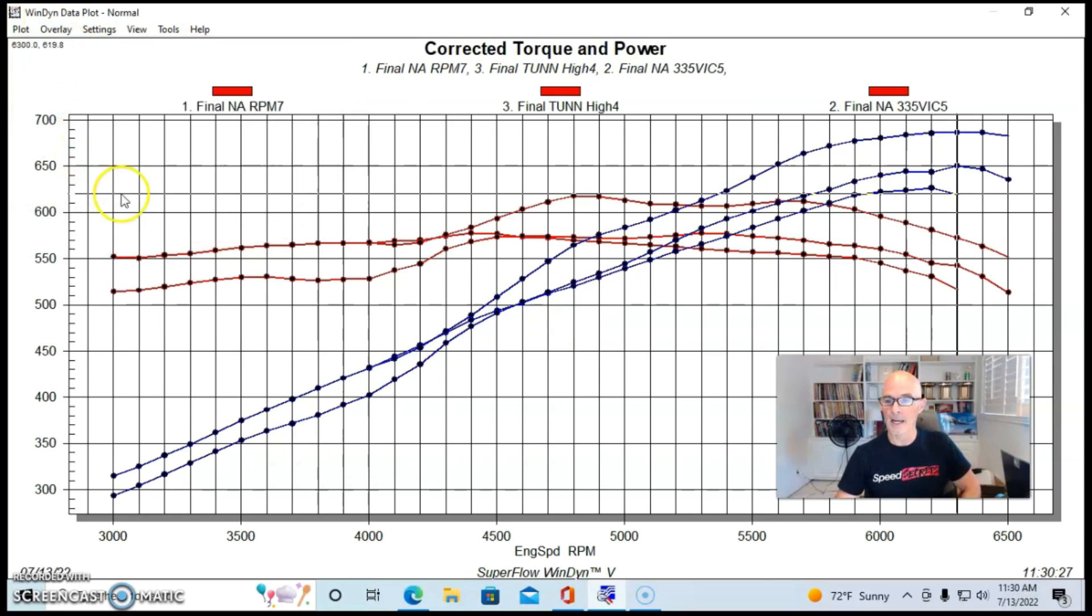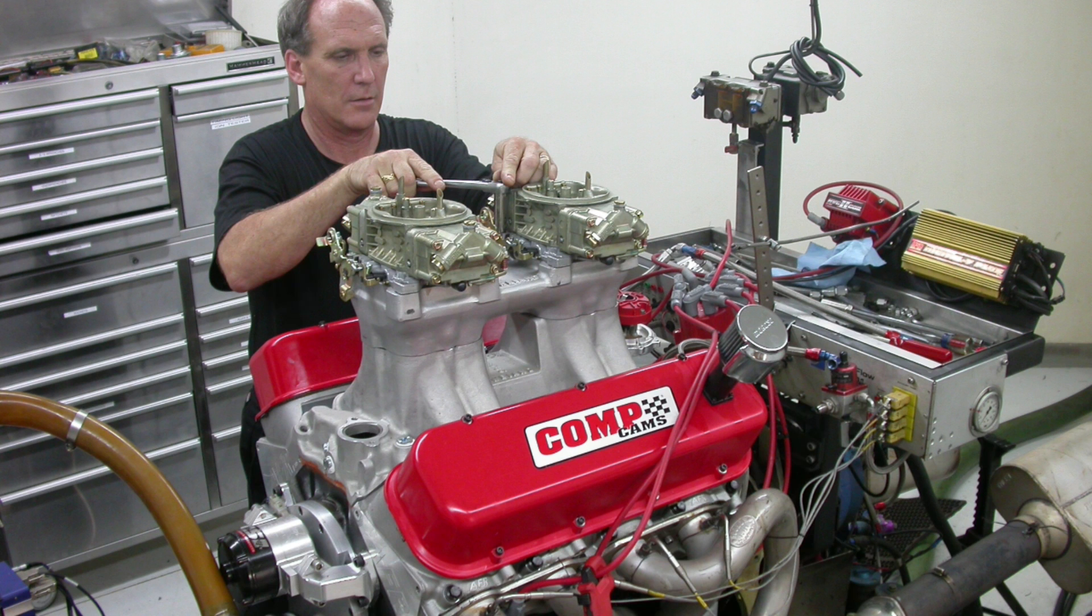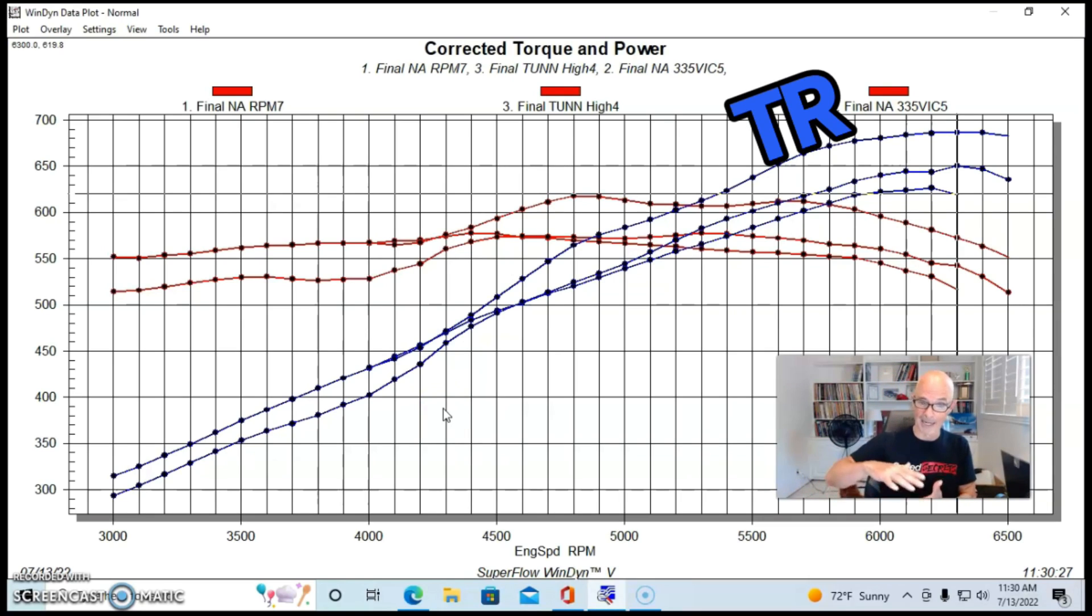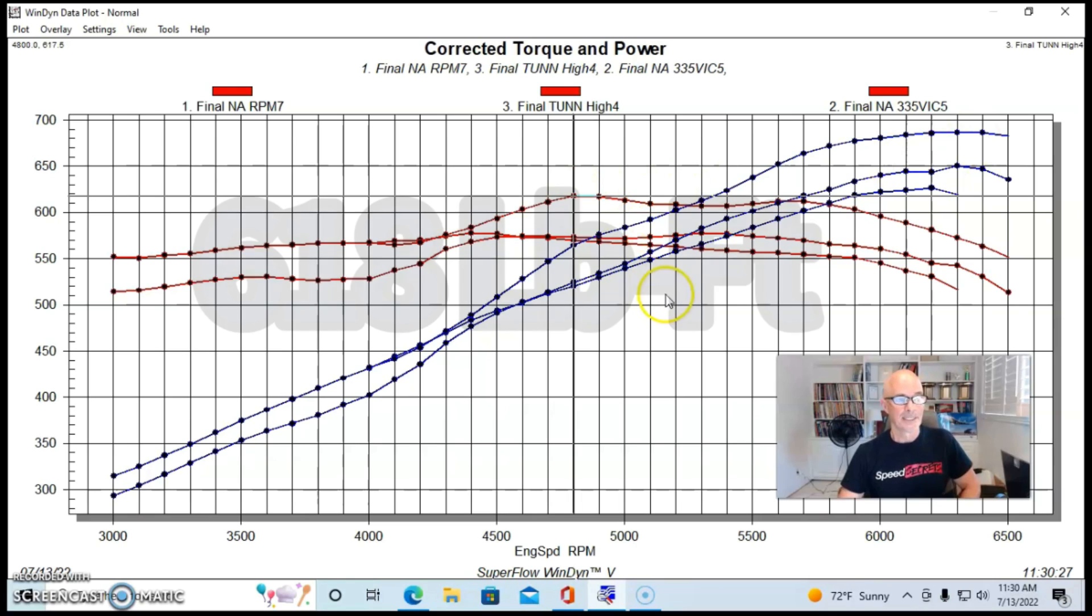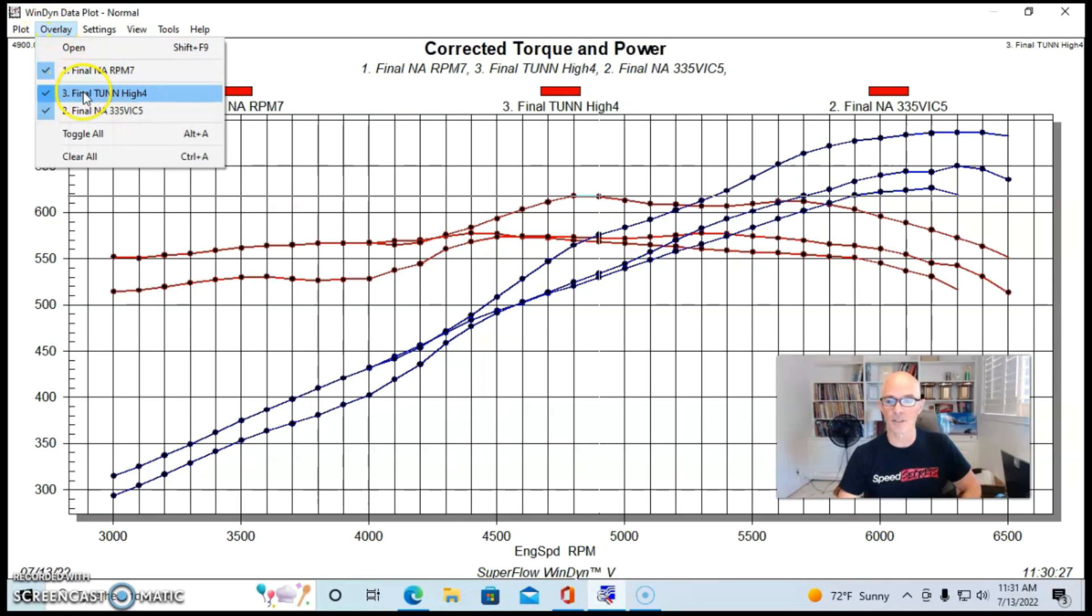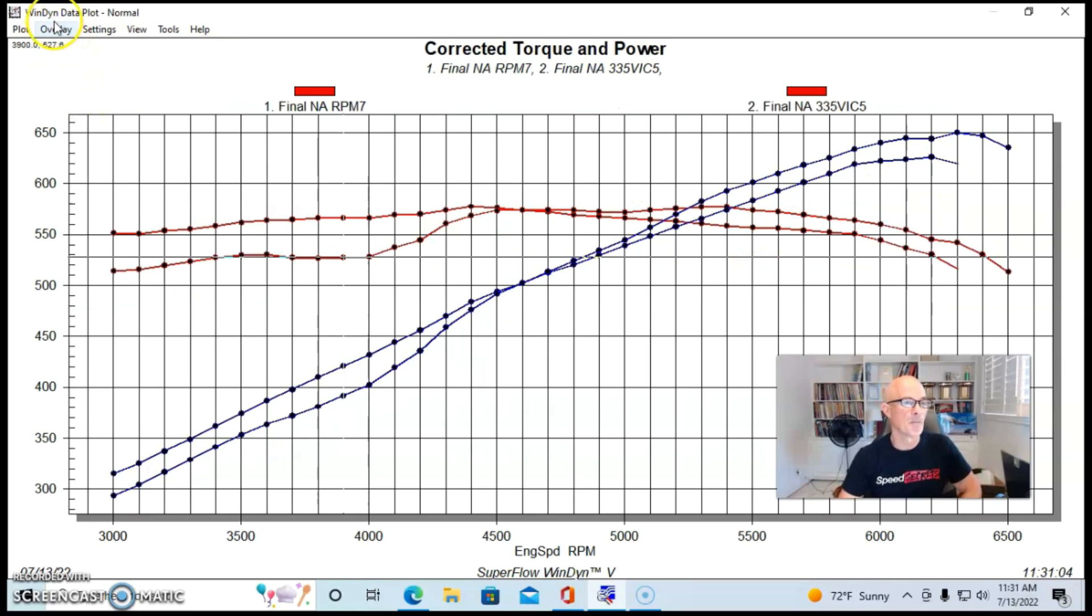But the real thing you want to take a look at is when we added a Weiand tunnel ram and two 750 Holleys. The tunnel ram - it liked the tunnel ram. It made a lot more power, pushed power up to 687 horsepower. Peak torque was up to 618 foot-pounds of torque so it did really well. Obviously with a tunnel ram it liked having that style induction system - two carburetors, better runner length than the single plane or the dual plane combination. Looking back I wish we would have run the blower with the tunnel ram because I think we would have had even more power.